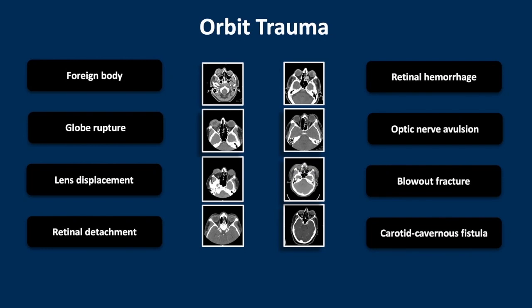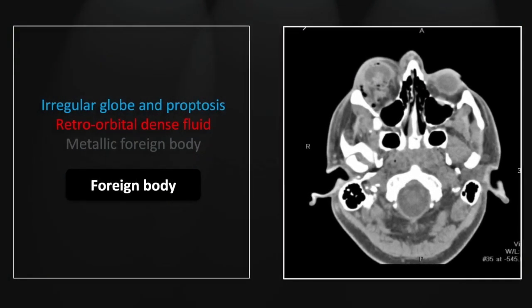Our topic for this session is orbit trauma. We'll begin with the obligate foreign body — 'you'll shoot your eye out.' This case is not subtle: you can see the abnormal contour of the globe, consistent with a globe rupture.